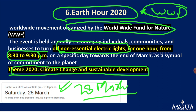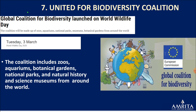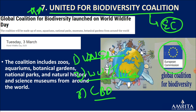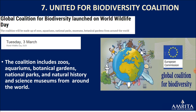Next is the United for Biodiversity Coalition — I consider it a very important topic because this coalition is started by the European Commission. When a question comes, options may include UN programs, WWF, or IUCN, but the answer is the European Commission — that's why it's important. This coalition is just a commitment, a pledge for biodiversity conservation. It includes zoos, aquariums, national parks, museums, and botanical gardens around the world.